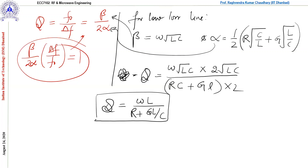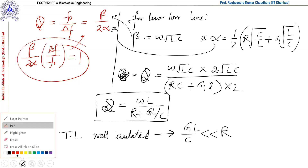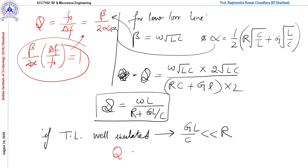Now if I say the transmission line is well insulated, then GL/C is very very less than R. In that case the formula will simplify to Q equals ωL/R. So we can find out the quality factor, which is one of the most important things when we are dealing with resonators.